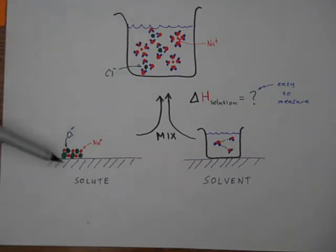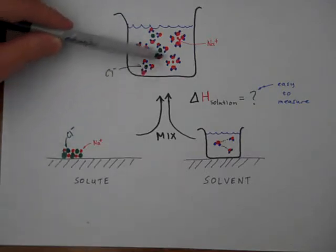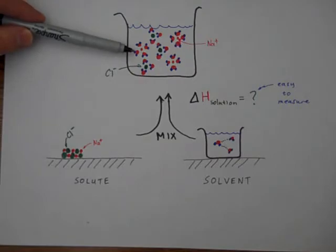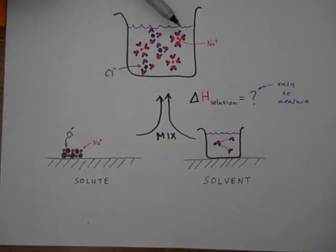This little red dot is a sodium cation with a positive charge, surrounded by the negative end of the water molecules. That's what's going on when we mix. We want to begin thinking about how this process takes place and look at the energies involved in making a solution.